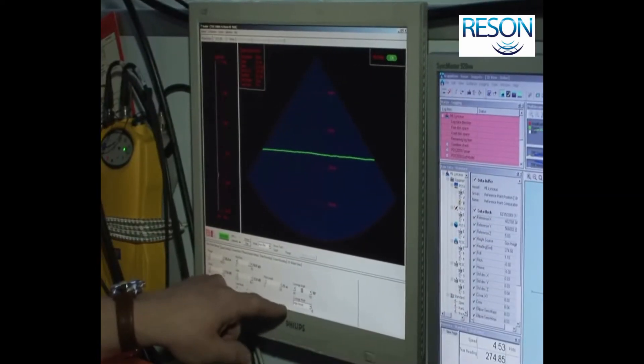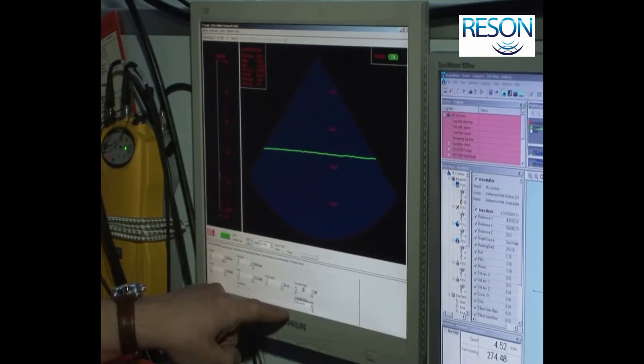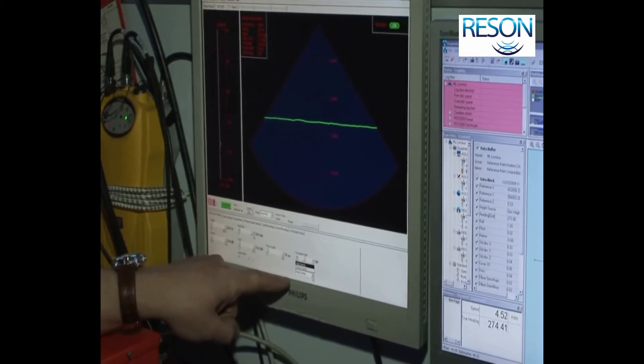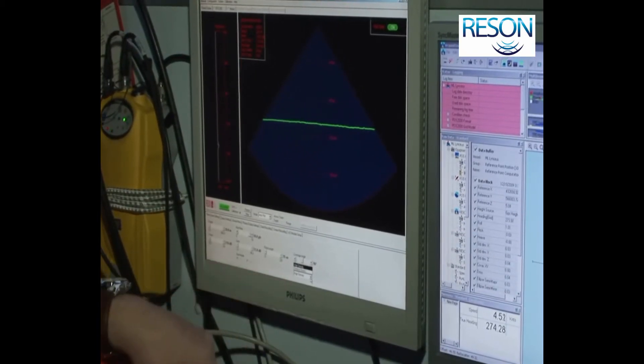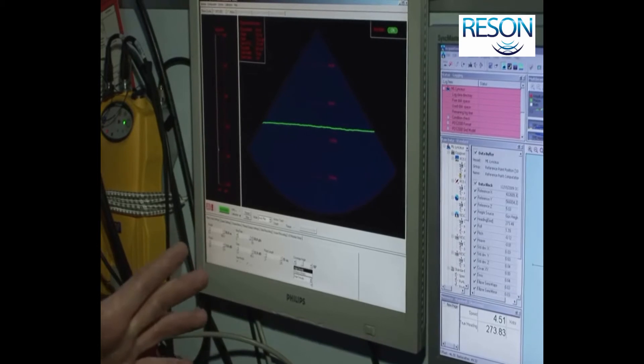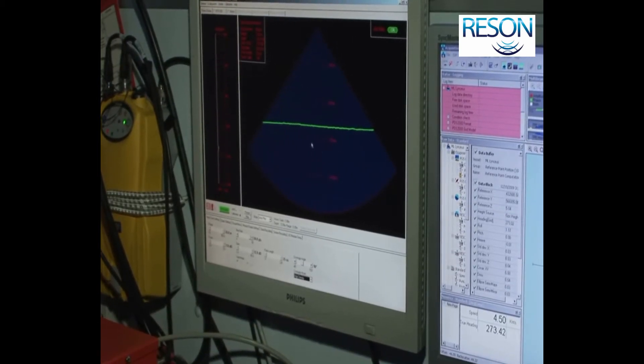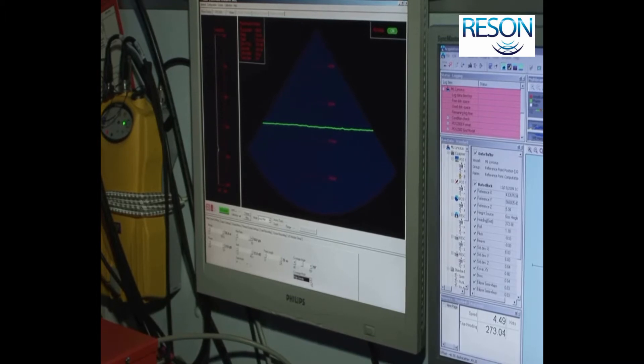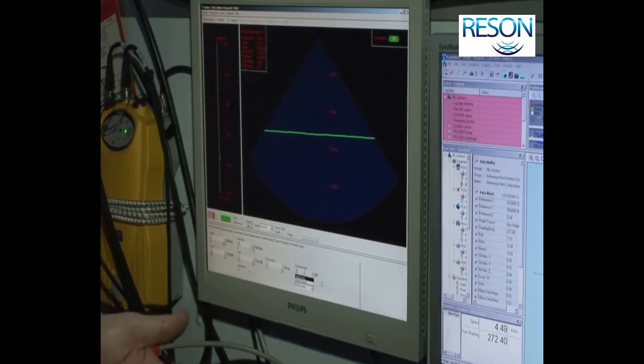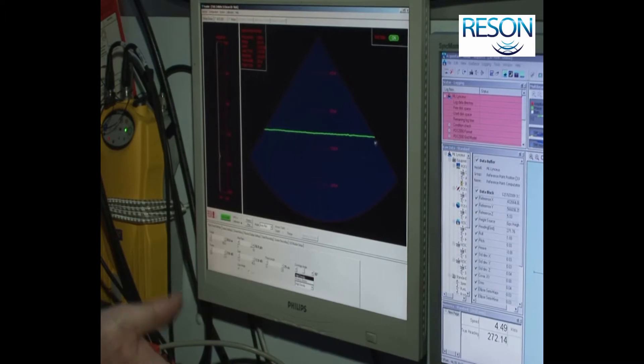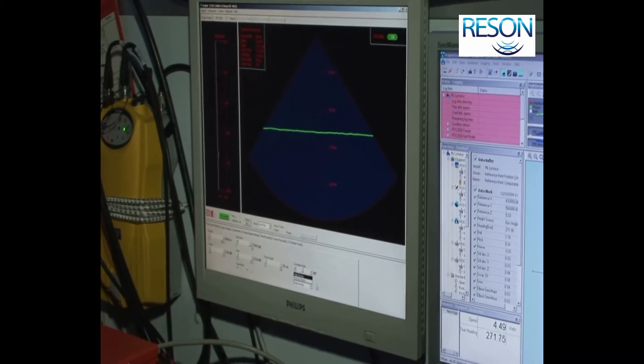There's two modes: high density and reduced beams. High density means we squeeze 511 beams into the sector we've chosen. Reduced beams means we chop off the beams that fall outside of the sector we've chosen.